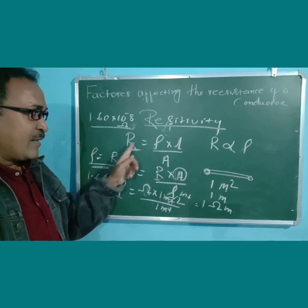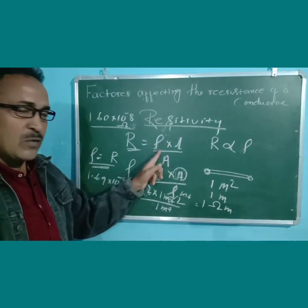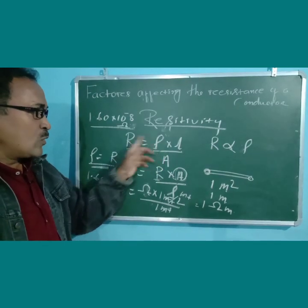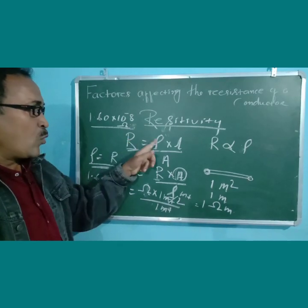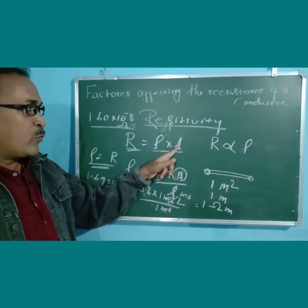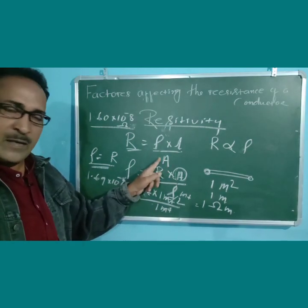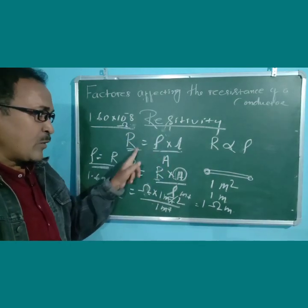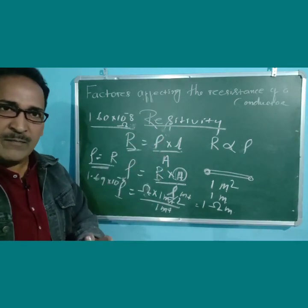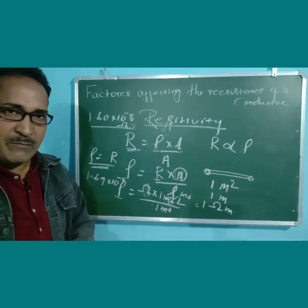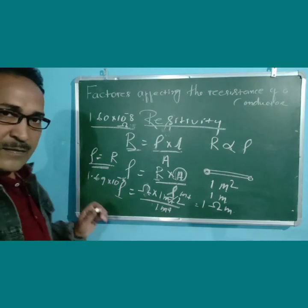We can solve different problems relating to resistance and specific resistance. If resistance is given, along with length of the wire and area of cross section, we can find out rho. Similarly, given specific resistance, area, or resistance, we can find the length of the wire or other quantities. All these things we can solve through different problems when asked in the examination. Thank you very much.